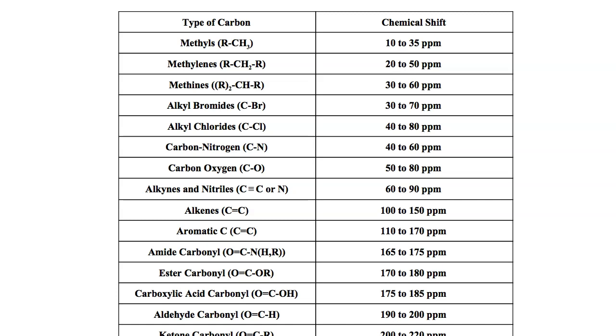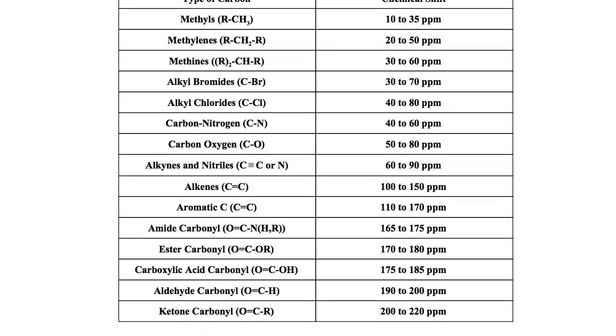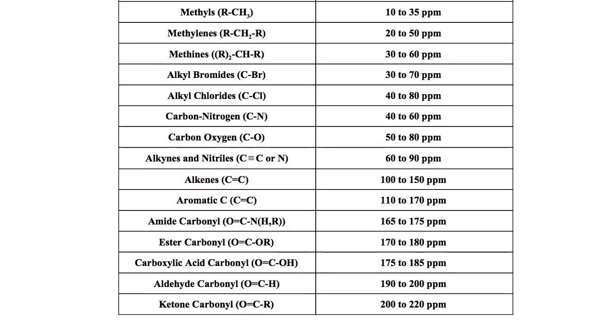Now as we start to approach 100, you're going to be talking more about your triple bonds. Your alkynes and your nitriles - carbons that are associated with those types of functionalities are going to appear somewhere from the lower end 60 all the way up to about 90 ppm. When you get your double bonds, your alkenes, those are going to end up around 100 to 150. So they can have a pretty wide range.